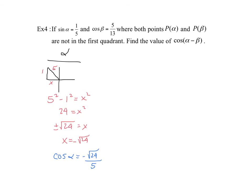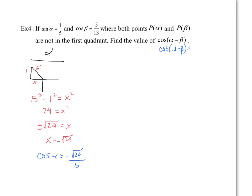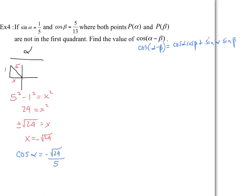We're asked to find the value of cos(α − β). The identity is: cos(α − β) = cos α cos β + sin α sin β. We need cos α, cos β, sin α, and sin β. We were given sin α in the question and cos β in the question. We just found cos α = −√24/5. The last thing we need is sin β, which we'll find from the given cos β value.